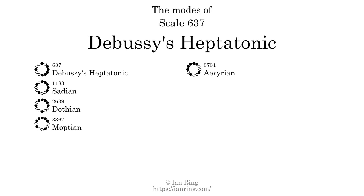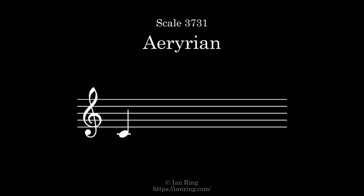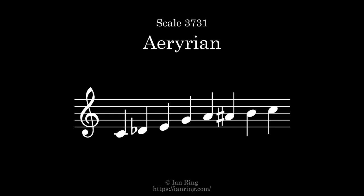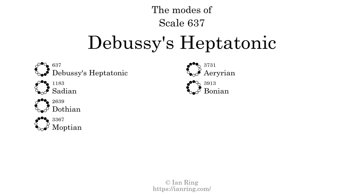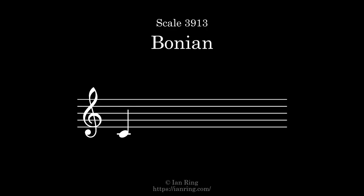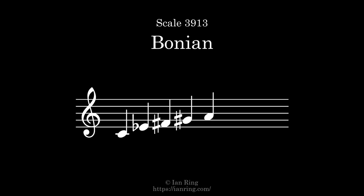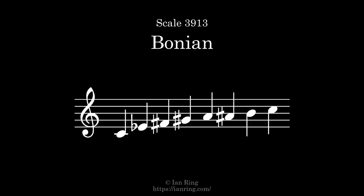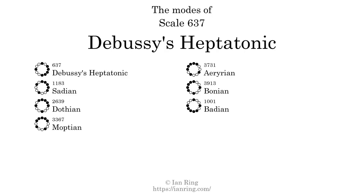The fifth mode is scale 3731, also known as Aririan. The sixth mode is scale 3913, also known as Bonian. The seventh mode is scale 1001, also known as Badian.